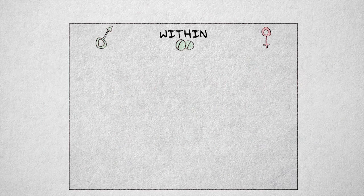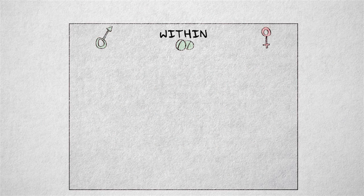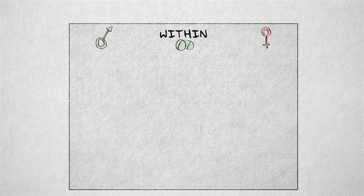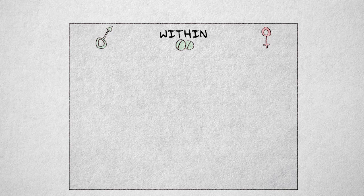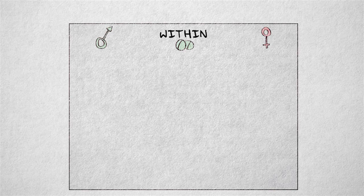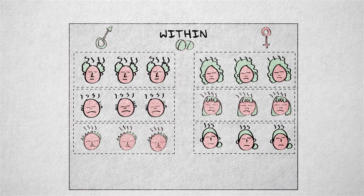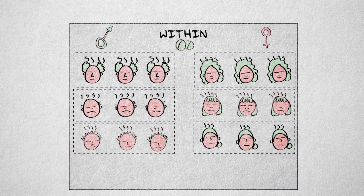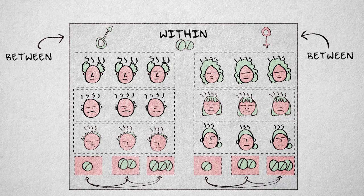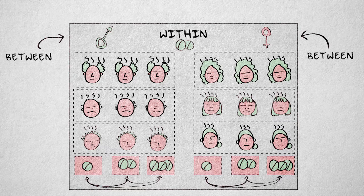Within-factors can be combined with other within-factors, or between-factors, in a factorial design. For example, in addition to the within-factor dosage, we could also investigate the factor gender. Of course, the participants can't be exposed to both levels of the variable gender, so gender remains a between-factor, but it can be combined with the within-factor dosage.